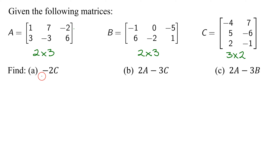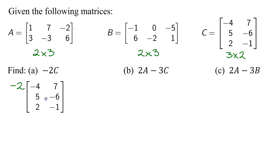In part A, we need to find negative two times matrix C. When you multiply a constant by a matrix, this is called scalar multiplication. The way you do it is you take your constant or scalar and multiply every single element in your matrix by that number.